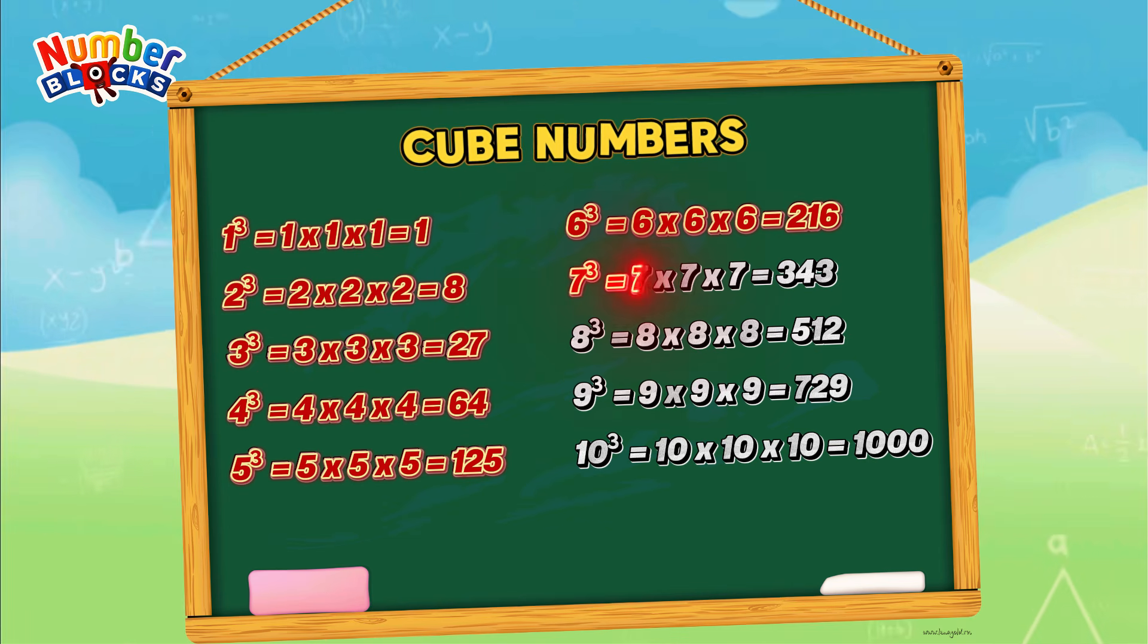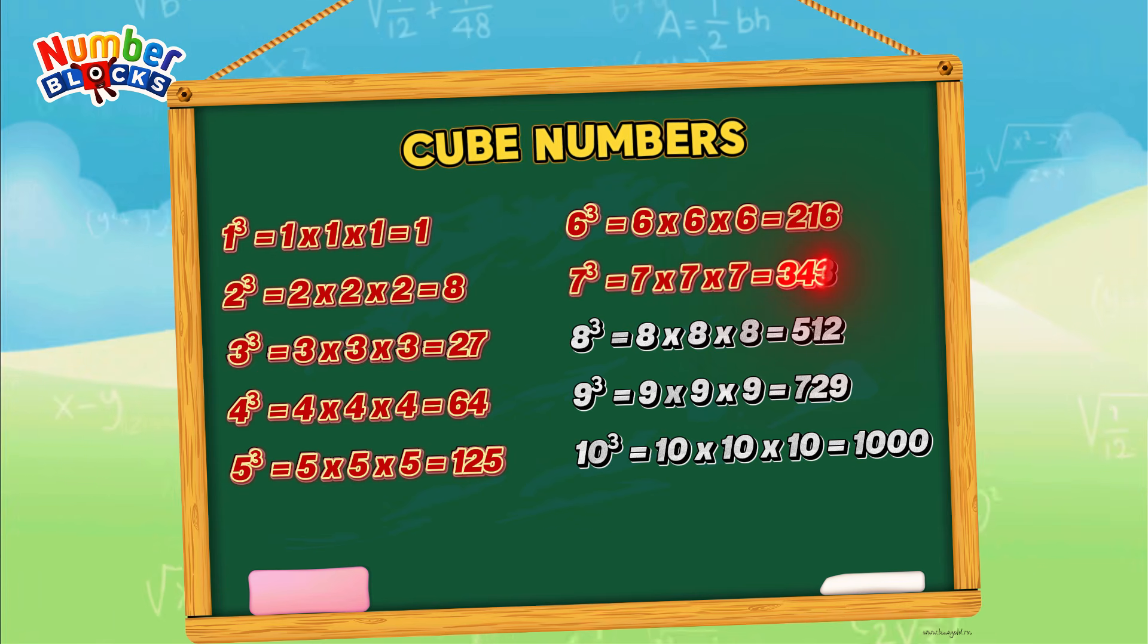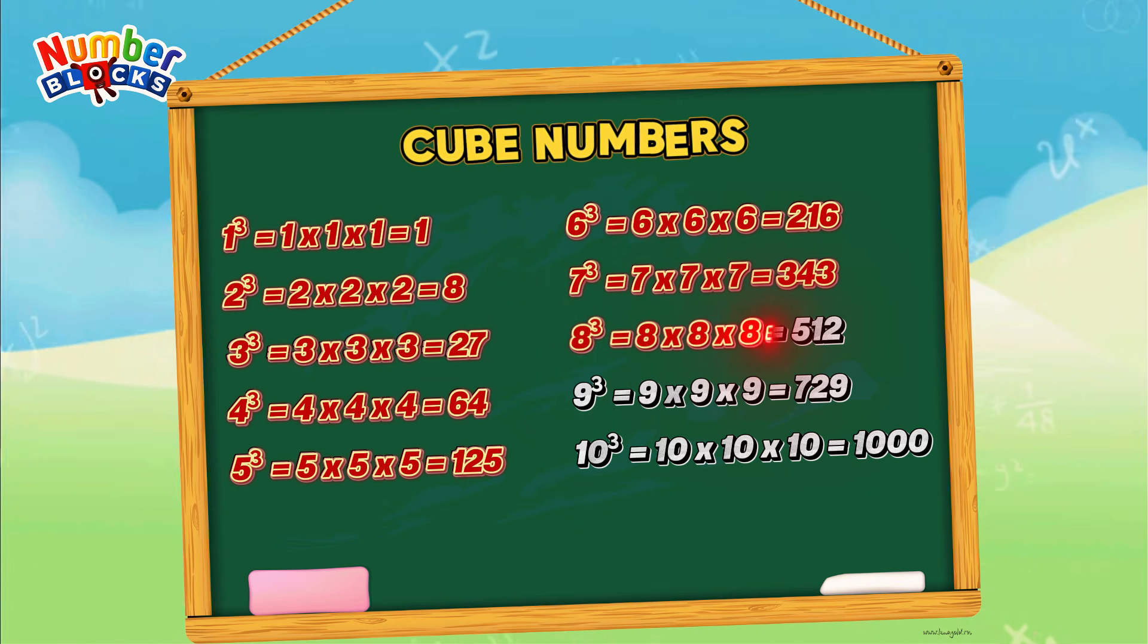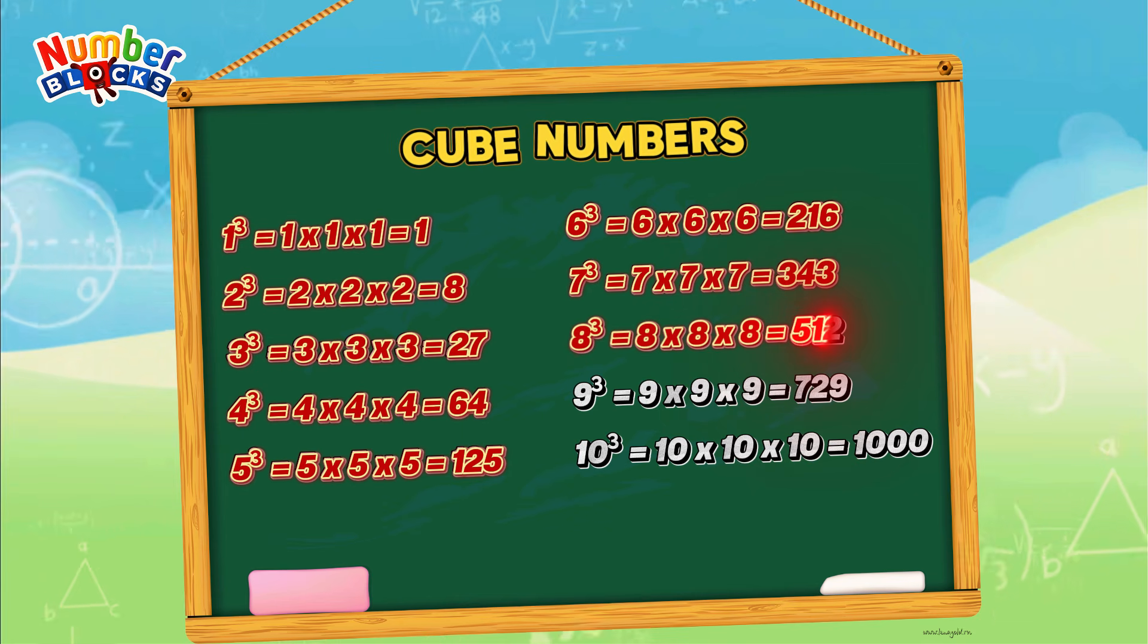7 cube, or 7 times 7 times 7, equals 343. 8 cube, or 8 times 8 times 8, equals 512.